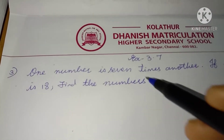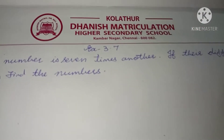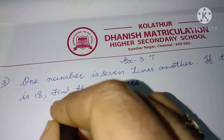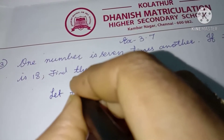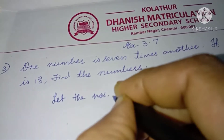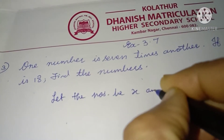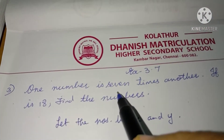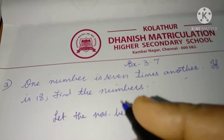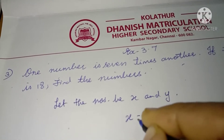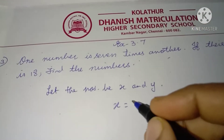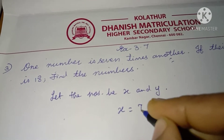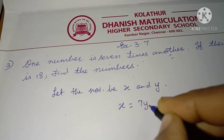Problem: one number is 7 times another. If the difference is 18, find the numbers. Let the numbers be x and y. One number is 7 times another. Therefore, if you take x, the first number is 7 times the other number. Therefore, x is equal to 7y.